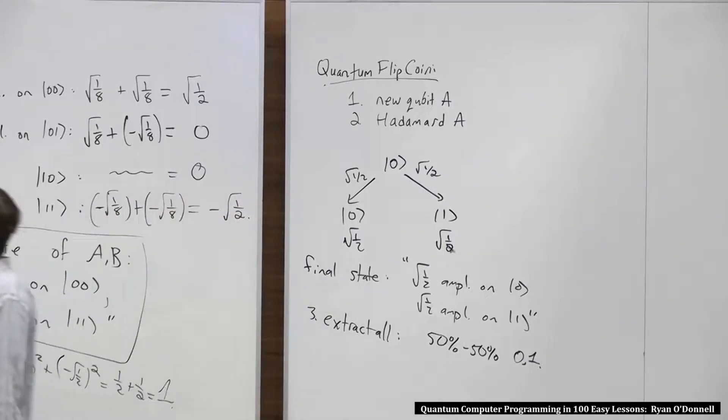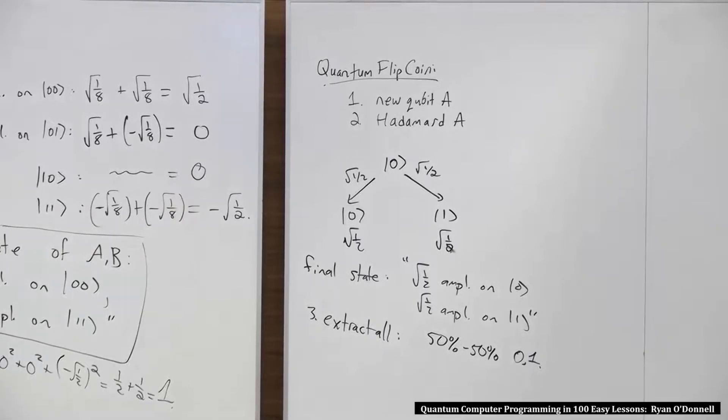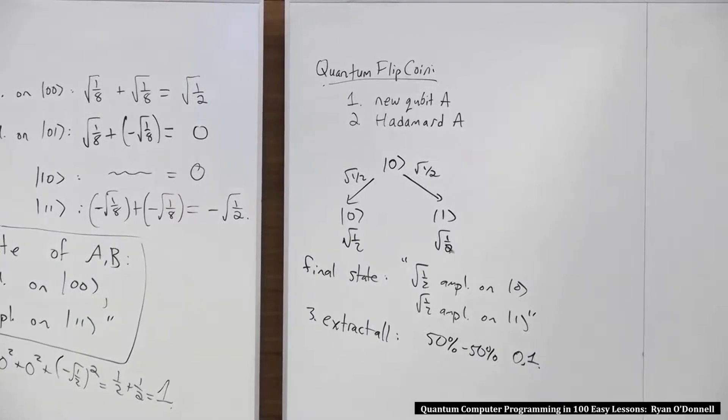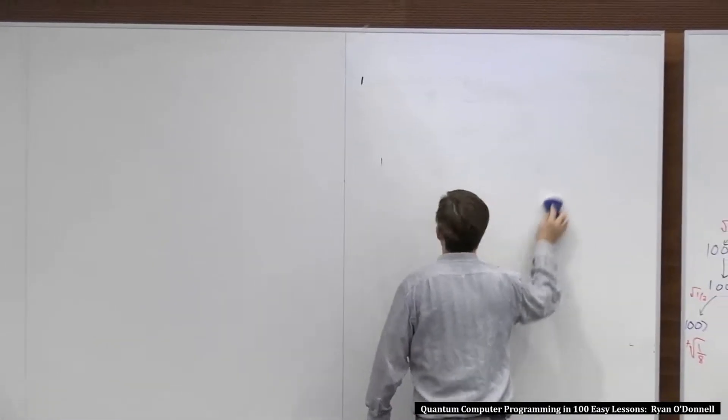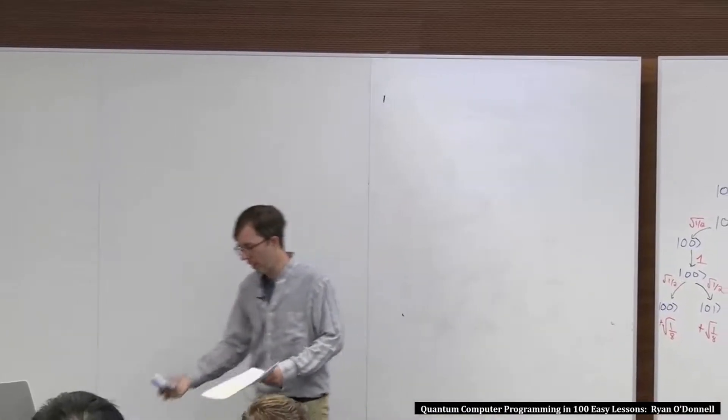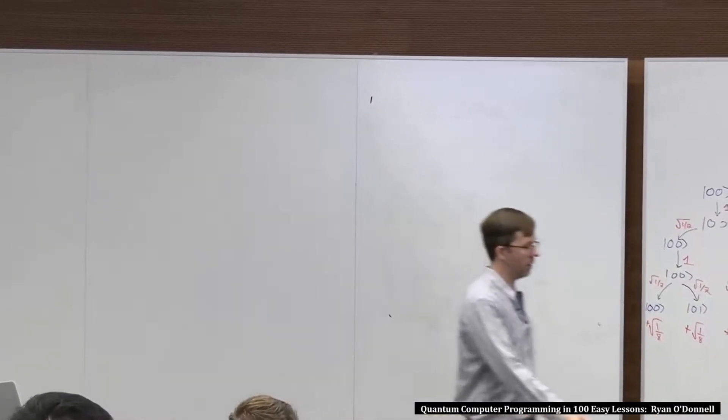Now I'm going to do some similar example over here. But I'm just going to throw a toggle in as the first step. Effectively, I'm just going to watch what happens when you do Hadamard on 1, which we kind of already know what happens, but let's do it.